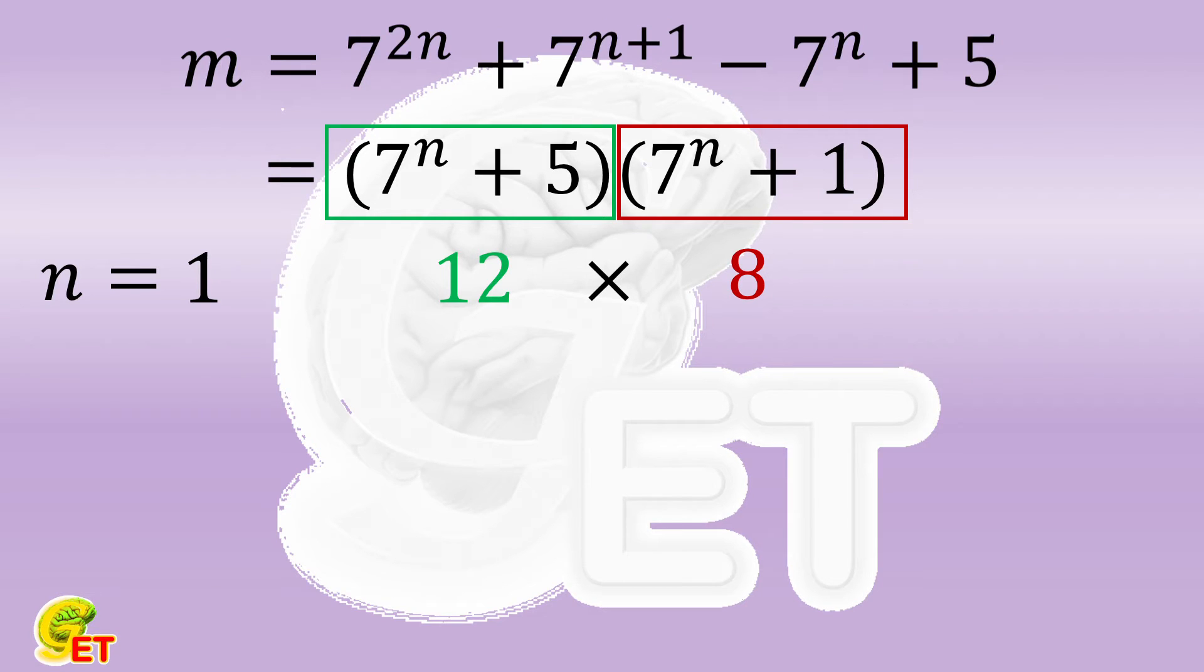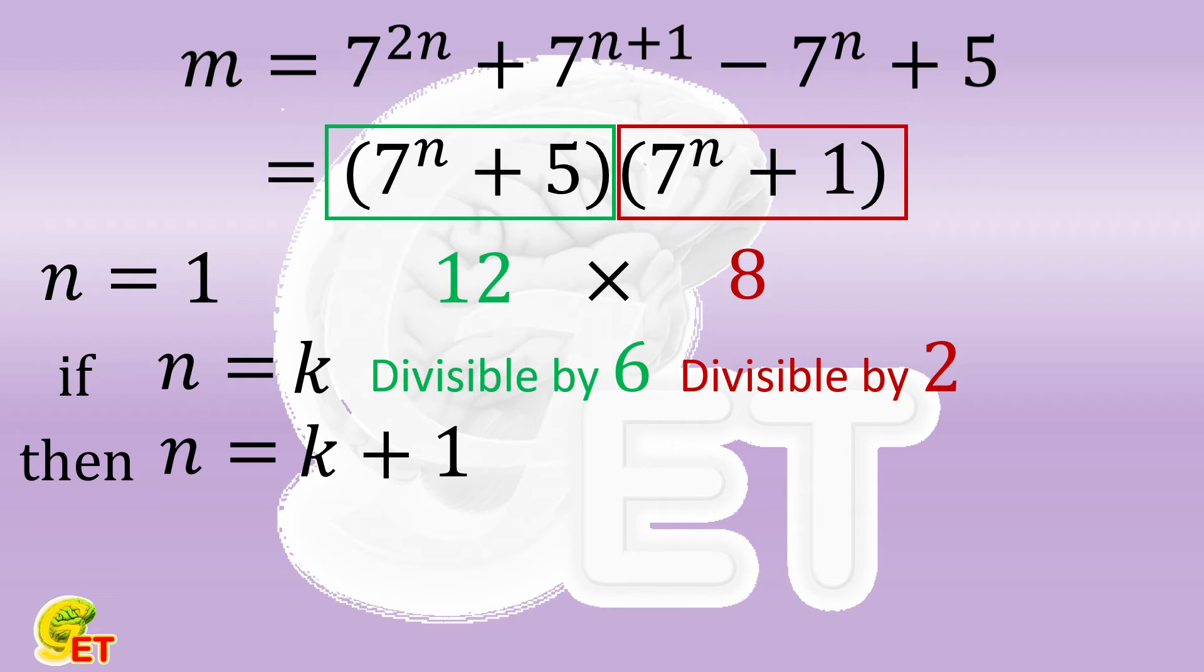If n is equal to any natural number k, the first factor is divisible by 6, and the second factor is divisible by 2. Then let's take a look at the case when n is equal to k plus 1, whether we can still infer that they are divisible by 6 and 2 respectively.